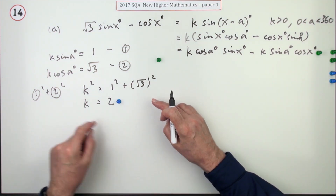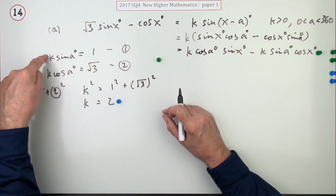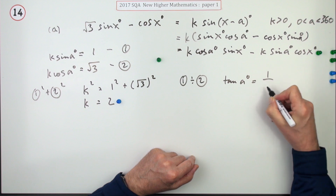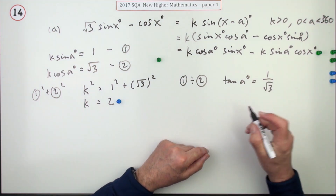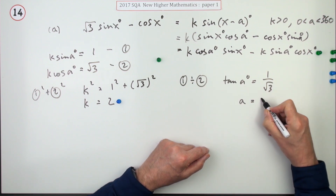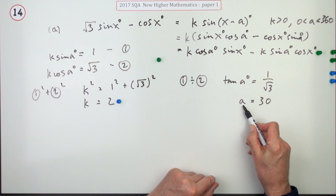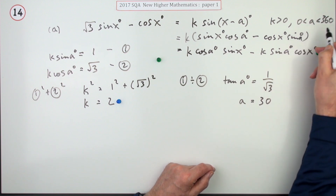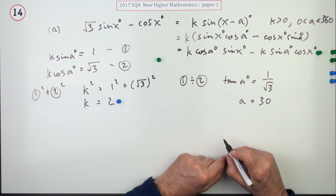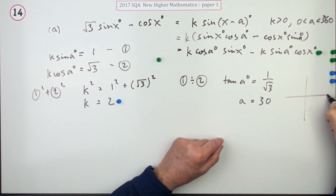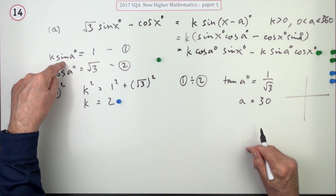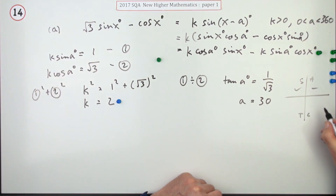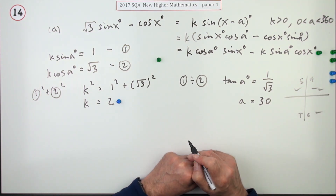To get a, divide the two equations: that gives sine over cos making tan a = 1/√3. You recognise that immediately as 30 degrees. The number a itself is just 30, though you won't be penalised for degree signs. To double-check: k is positive, meaning sine is positive and cosine is positive, so you are in the first quadrant. It is indeed 30 degrees.